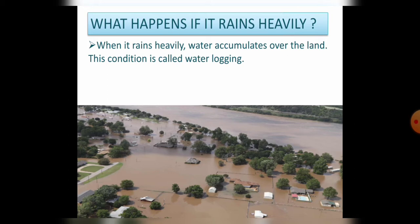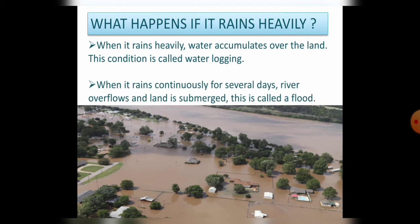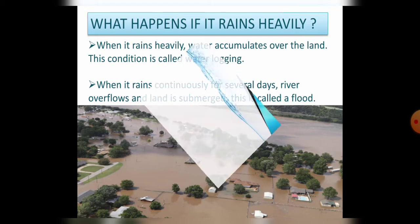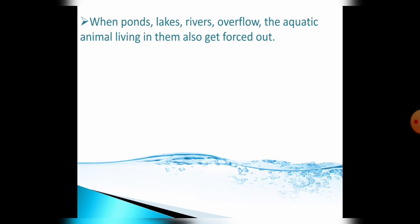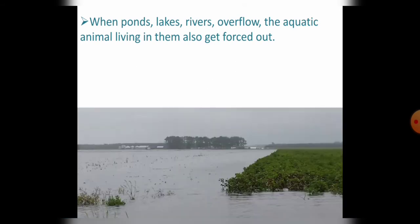लेकिन जब बारिश लगातार कई दिनों से हो तो नदियां overflow करती हैं और यह पानी land area में चला जाता है, इसी को flood कहते हैं। जब भी झील, तालाब और नदियां overflow करती हैं, तो यह अपने साथ aquatic animals को बहाकर ले जाती हैं।